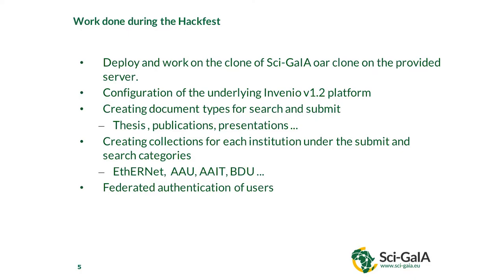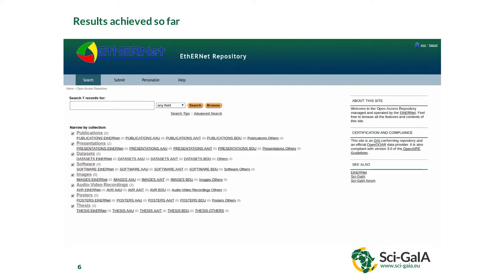Collections include Ethernet, Addis Ababa University, Institute of Technology, Bahir Dar University, and so on. We have also managed to integrate federated authentication for the system. This is the final result of the hackfest on the Ethernet repository. As you can see right here, we have about seven data types that can be posted and searched, like publications, presentations, theses, posters, and so on. Each university or institute also has a category under each data type.